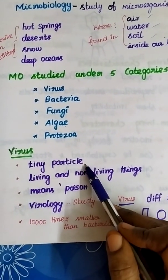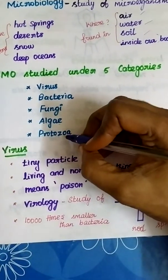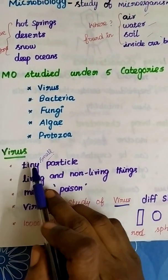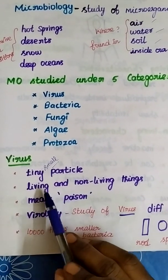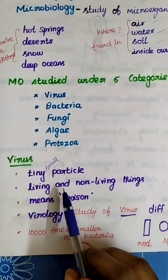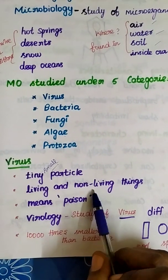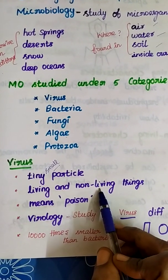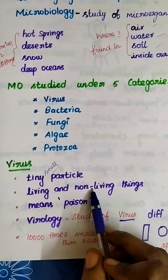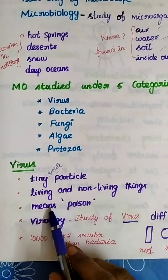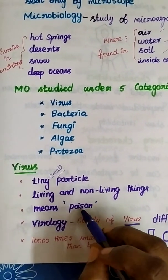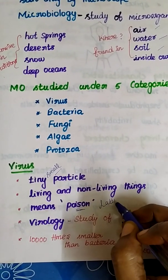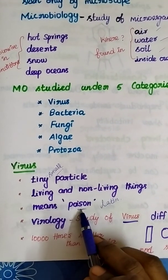A virus is a tiny particle. In a virus, both living and non-living characteristics are present. The word virus comes from Latin, meaning poison.